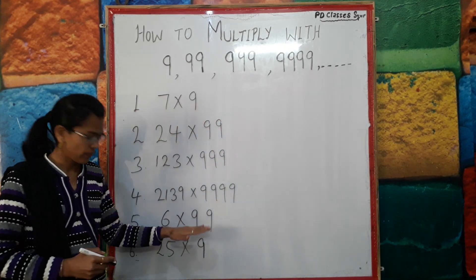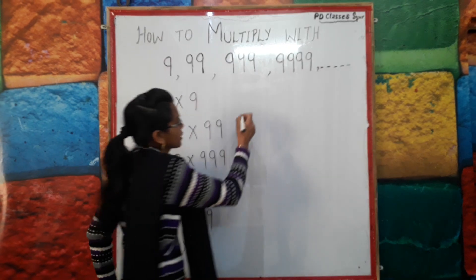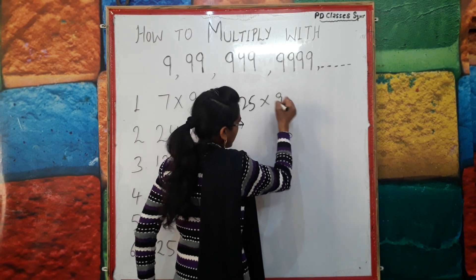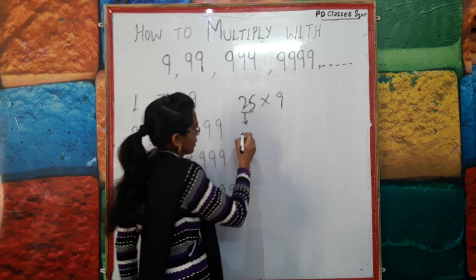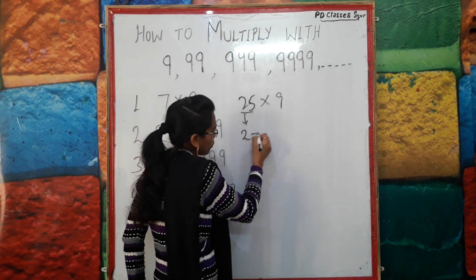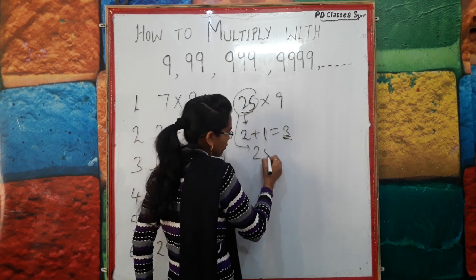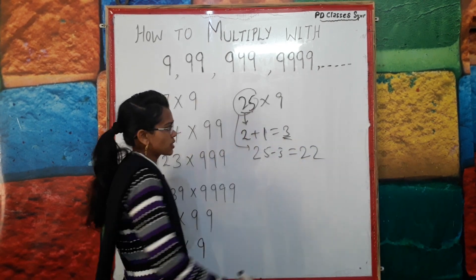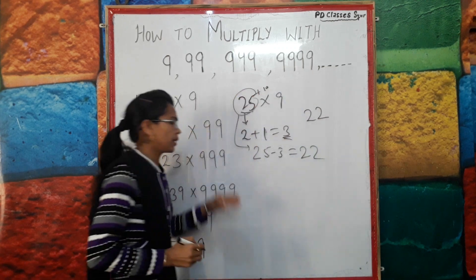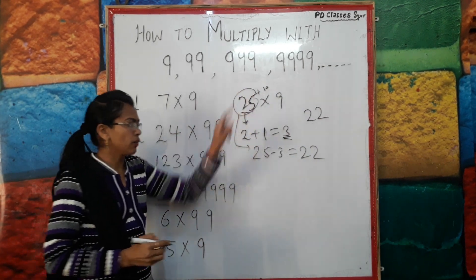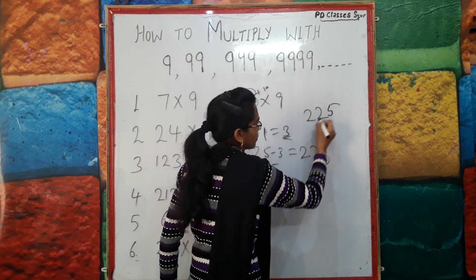Now the last pattern: how do we multiply a double digit by single 9? For example, 25 × 9. This pattern is slightly different. First take the first digit of the double digit number, which is 2, and add 1 to it: 2 + 1 = 3. Now subtract this from the full number: 25 minus 3 = 22. So the first part of the answer is 22. Now take the units digit 5 and convert it to 10 by adding 5. The final answer is 225.